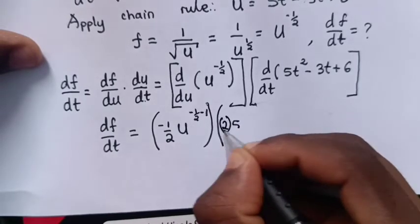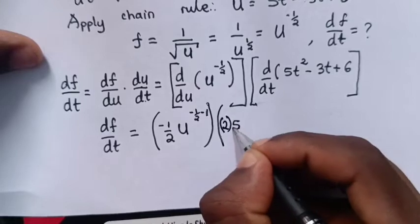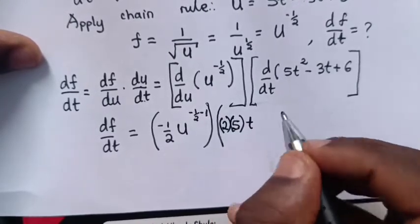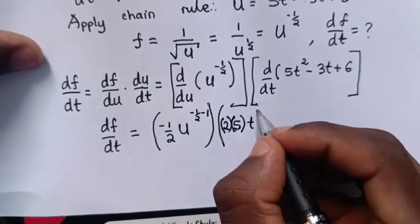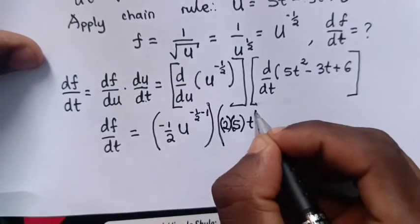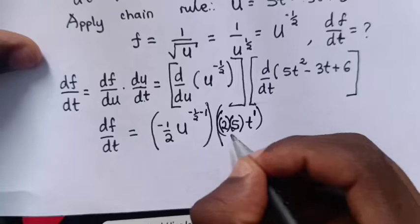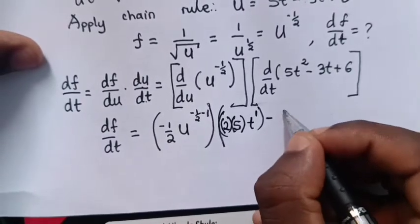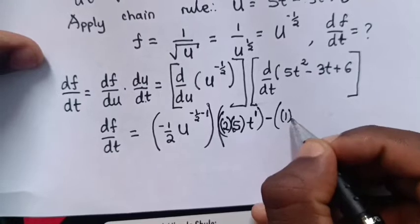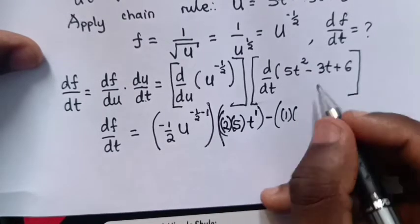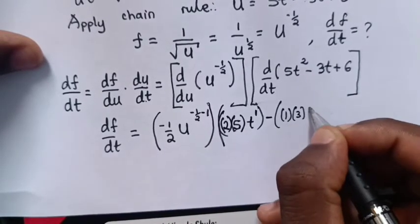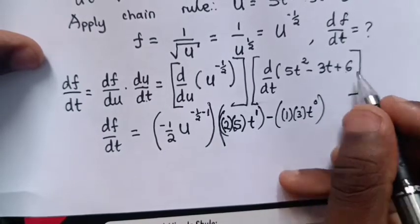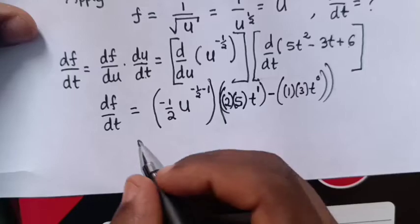Here, exponent is 2, 2 times coefficient 5 equals 10t^(2-1) which is 10t. Minus: power 1 times coefficient 3 times t^0. Then, derivative of constant is 0.